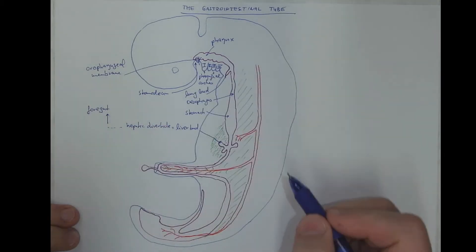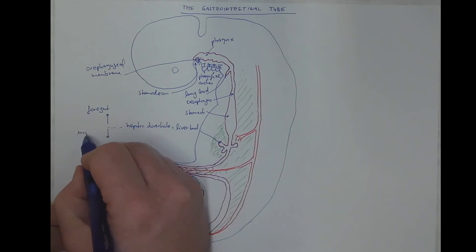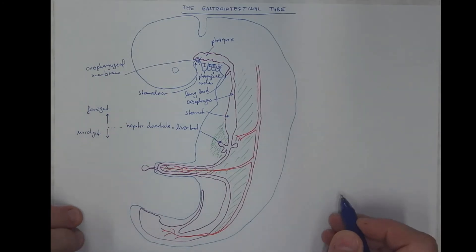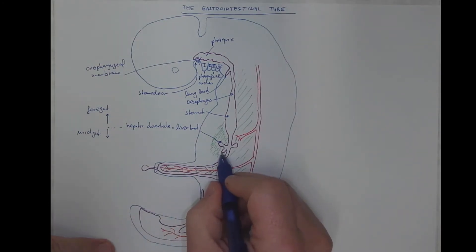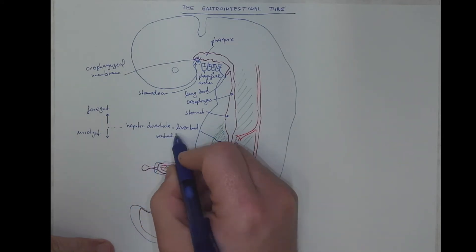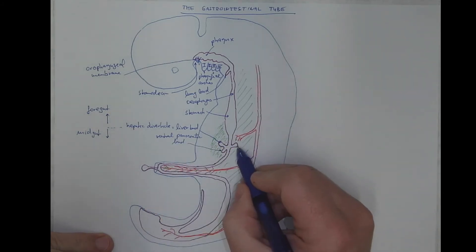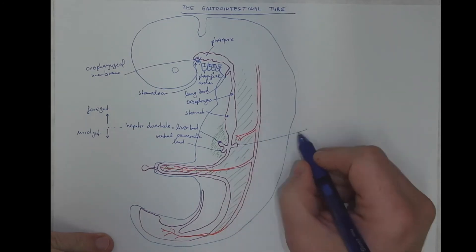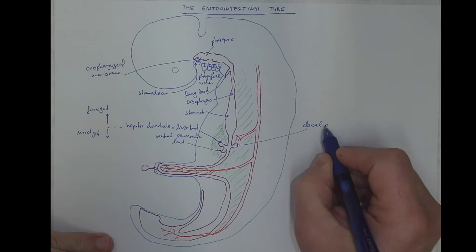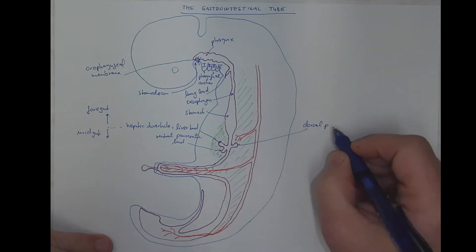the foremost part of the gastrointestinal tube, which is posteriorly it's midgut. Then we got the ventral pancreatic bud, and on the opposite there is the dorsal pancreatic bud. So obviously pancreas will originate from these two buds, that will meet and merge.